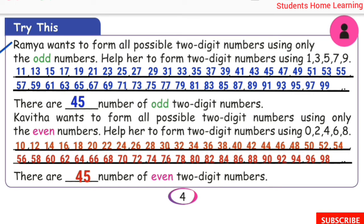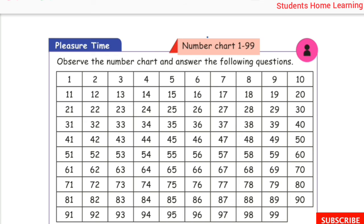Ramya wants to form all possible 2-digit numbers using only the odd digits. Help her to form 2-digit numbers using 1, 3, 5, 7, 9. The 2-digit numbers range from 10 to 99. The last 2-digit number is 99, which is an odd number.